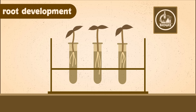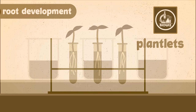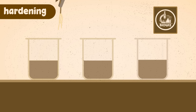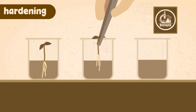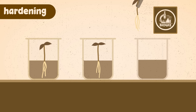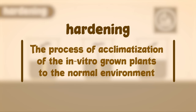The young plants thus developed are called plantlets. These plantlets are then transferred to soil-containing pots for a process called hardening. Hardening procedures make the plantlets capable of tolerating the relatively harsher environments outside the laboratory.